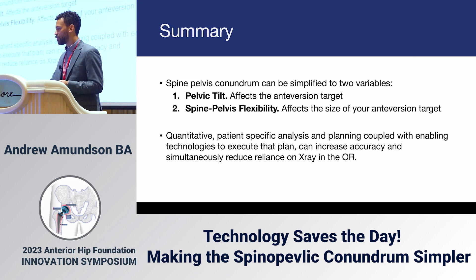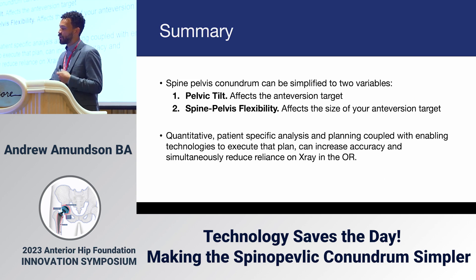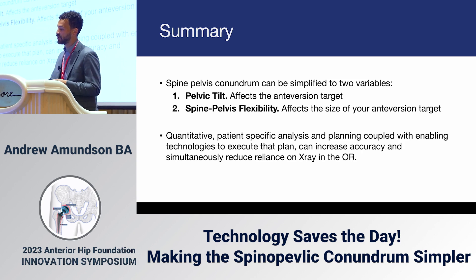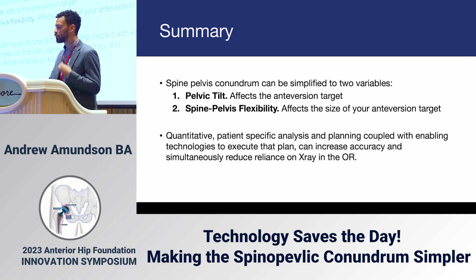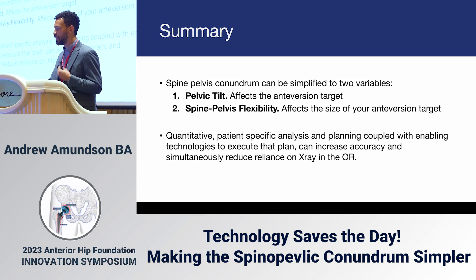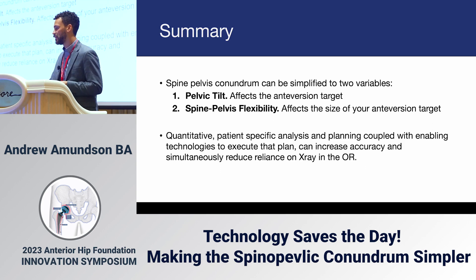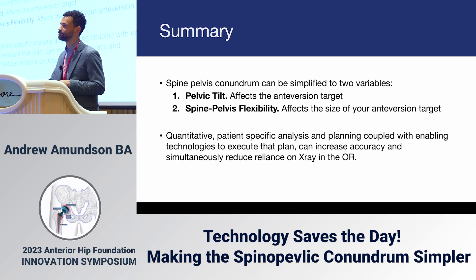In summary, the spinal pelvic conundrum can be simplified into two variables: pelvic tilt, which affects the anteversion target, and spine pelvis flexibility, which affects the size of your anteversion target. Quantitative patient-specific analysis and planning, coupled with enabling technologies to execute that plan, can increase accuracy and simultaneously reduce reliance on X-ray in the OR.